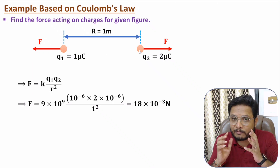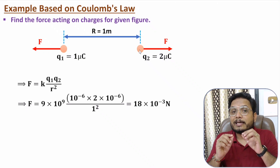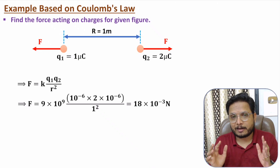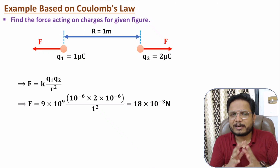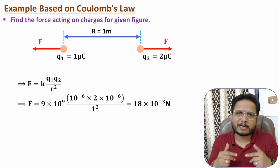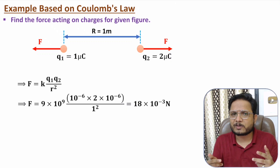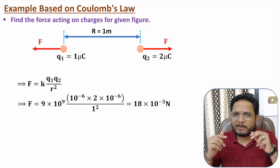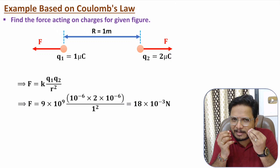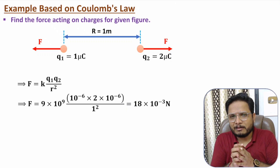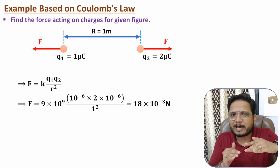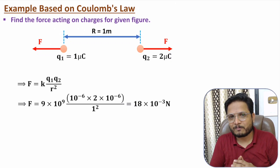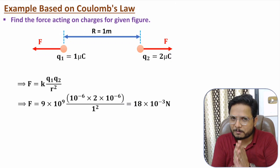So this is how we can understand Coulomb's law. The force of 18 × 10⁻³ newton is a repulsive force. In future videos I'll be solving more complex examples — I initiated with an easy example and will increase complexity going forward. Thank you so much for watching this video.